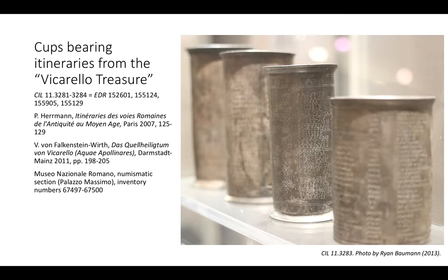This series of deposits included coins and other objects, many of them made of precious metals. Among these are the objects shown here: they're silver cups, four of them, inscribed with itineraries, and they're now in the Museo Nazionale in Rome.